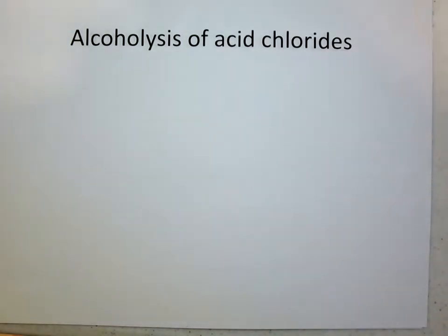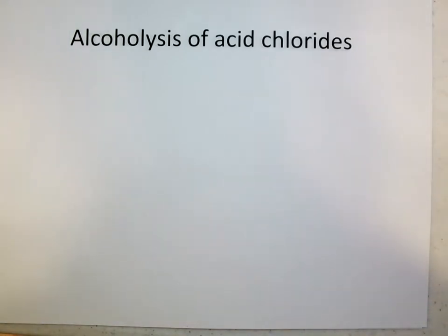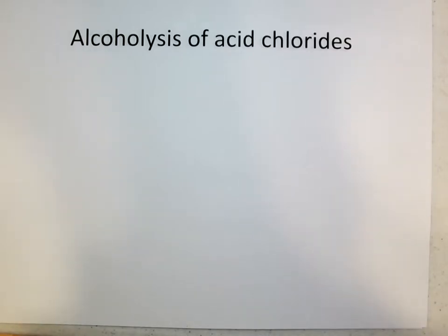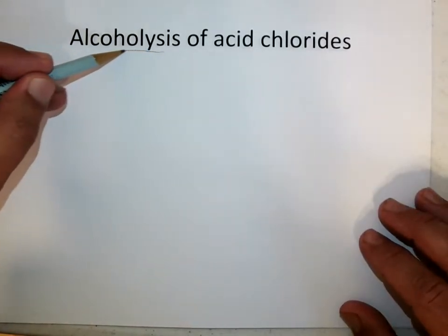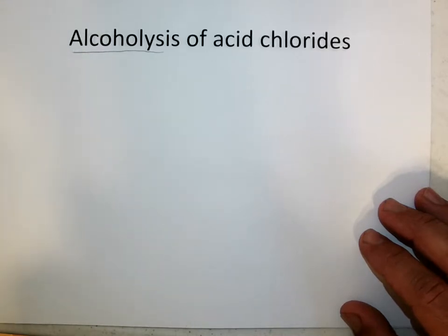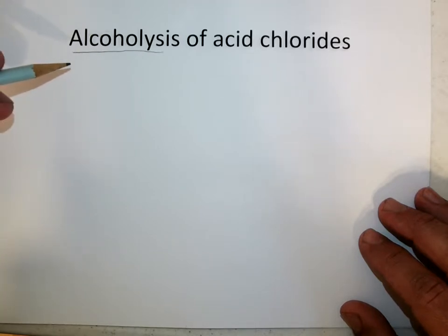We're coming into the last few mechanisms we're going to cover this semester, and we're going to do three different reactions in parallel — all generalizable and all very powerful for synthesis. The last one we did was turning an acid chloride into an acid by adding water to it. Acid chlorides, acid bromides, and acid iodides are all equivalently reactive. Now we're going to add an alcohol rather than water, and since both water and alcohol contain the OH group, which is the source of reactivity, they react similarly.